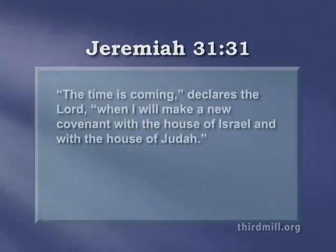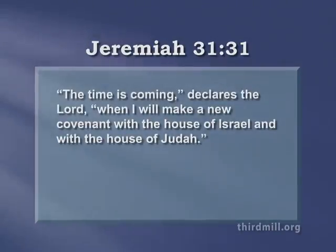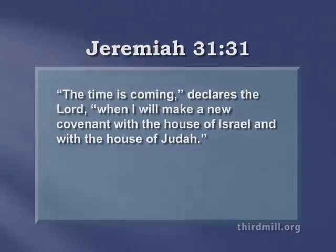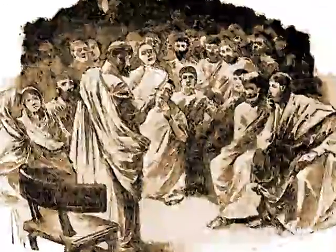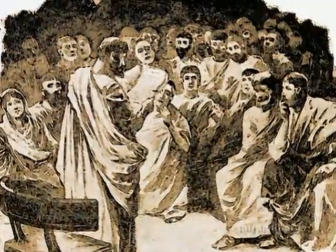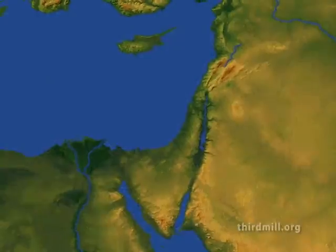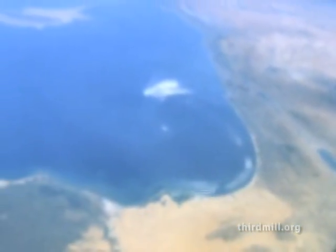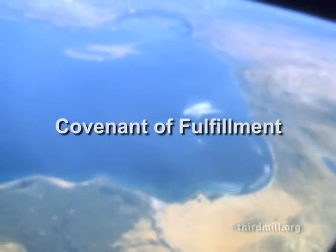This climactic covenant is mentioned many places in the Bible. But listen to how Jeremiah chapter 31 verse 31 speaks directly of the new covenant: The time is coming, declares the Lord, when I will make a new covenant with the house of Israel and with the house of Judah. The new covenant was designed to govern God's people when God fulfilled his promises to reestablish his people after exile and to spread his kingdom through them to the ends of the earth. And for this reason, we may speak of the new covenant as the covenant of fulfillment.